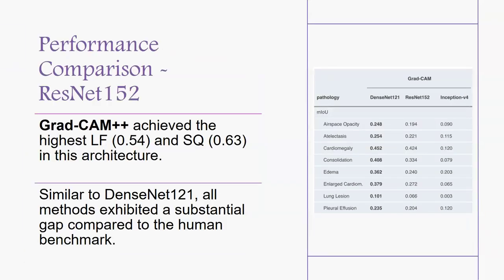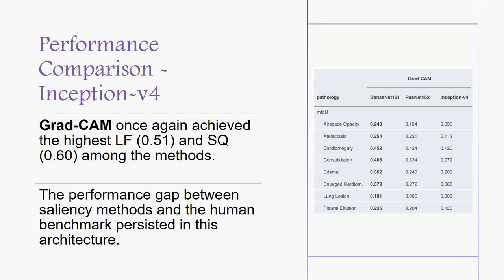Comparing with ResNet-152, Grad-CAM++ achieved the highest localization fidelity of 0.52 and segmentation quality of 0.63 in this architecture. Similarly to DenseNet, all methods exhibited a substantial gap compared to the human benchmark. For Inception version 4, Grad-CAM once again achieves the highest localization fidelity of 0.51 and segmentation quality of 0.60. The shortfall between the saliency methods and the human benchmark persists in this architecture as well.